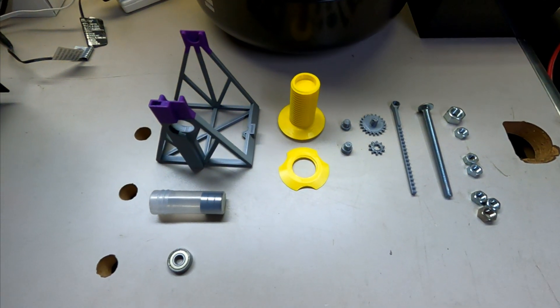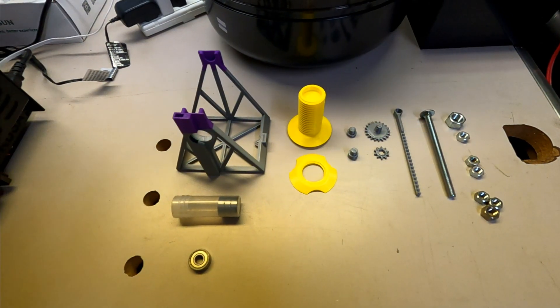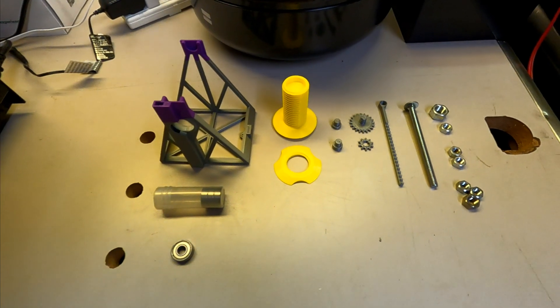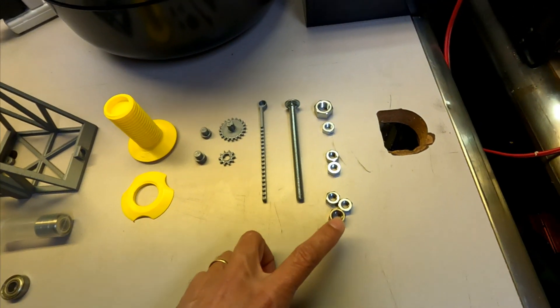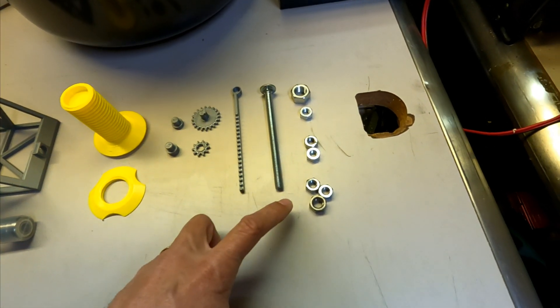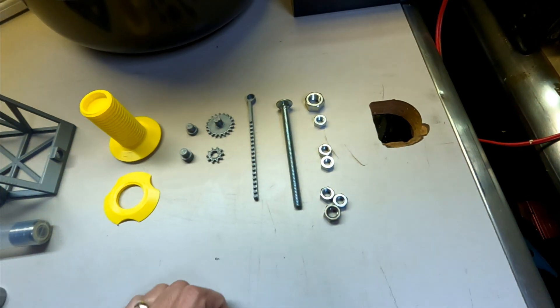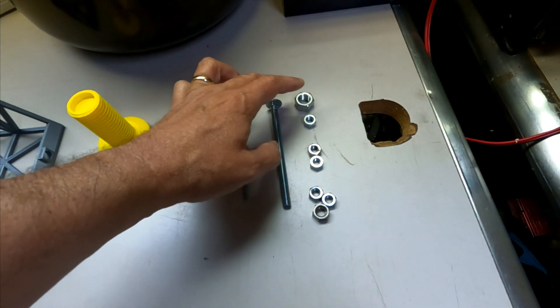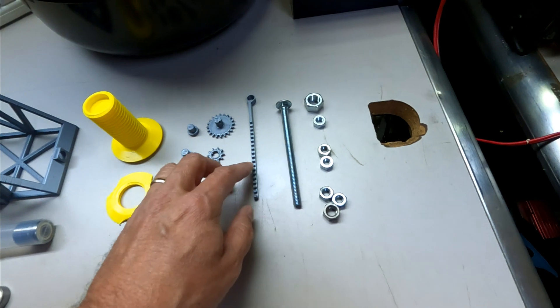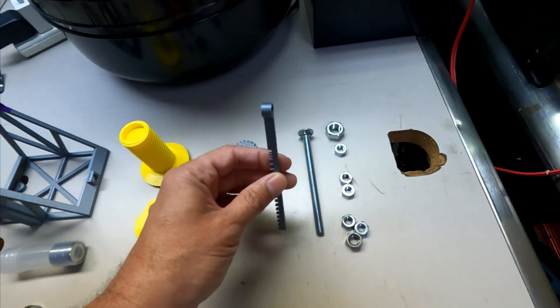These are the parts that you need to 3D print. I'm going to link to those in the description of this video. I picked out a set of hardware from my spare hardware box so that all of this hardware goes together and attaches to the top of this retractor.